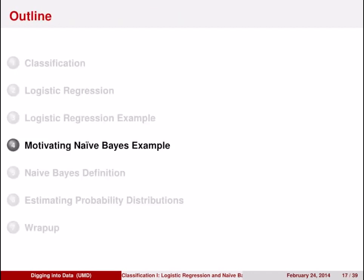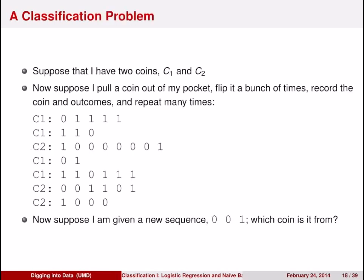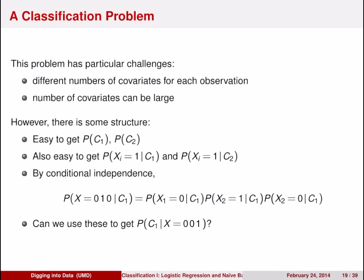Before we apply Naive Bayes to real data, let's start with a simple example: coin flips. Suppose you have two coins, C1 and C2 — they're unfair coins. Suppose I pull a coin out of my pocket, flip it a bunch of times, record the coin and outcomes, and repeat this a number of times. This sequence of coin flips represents your training data. Now suppose you're given a new sequence 001 — which coin is it more likely from? The problem of determining which coin generated a sequence of coin flips has some interesting challenges: there are different numbers of covariates for each observation, and the number of covariates can be large.